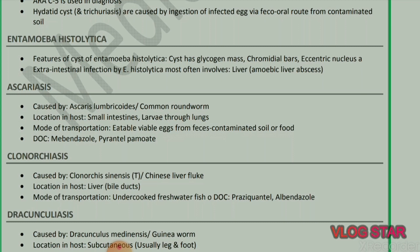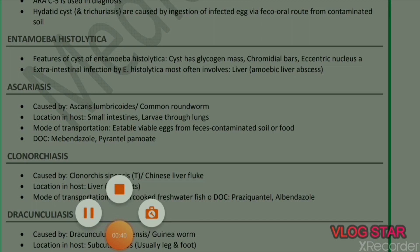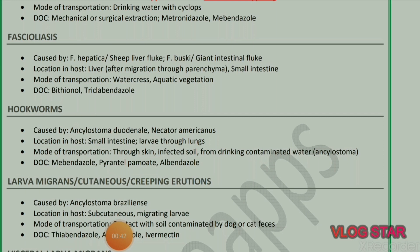Next parasite: Dracunculiasis, caused by Dracunculus medinensis, also known as Guinea worm. Location in host: subcutaneous tissue, usually the leg and foot. Mode of transmission: drinking water containing Cyclops. Drug of choice: mechanical or surgical extraction, metronidazole and mebendazole.